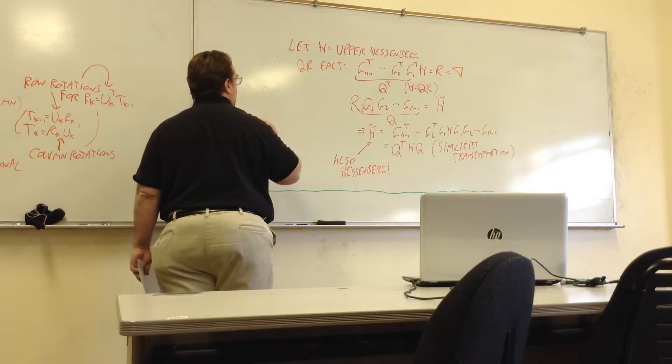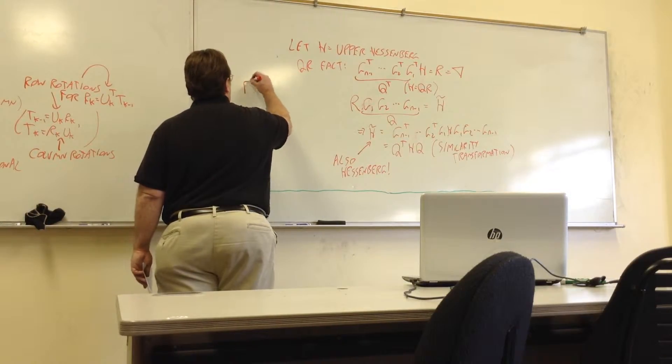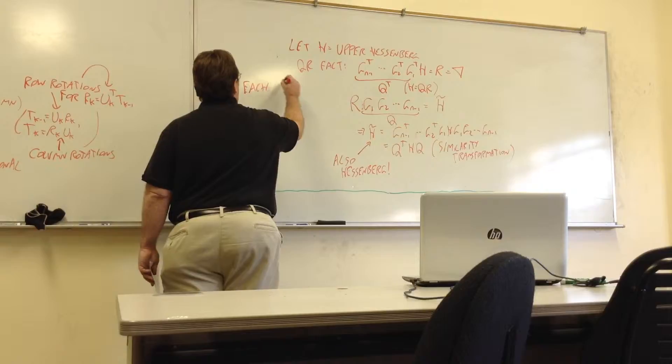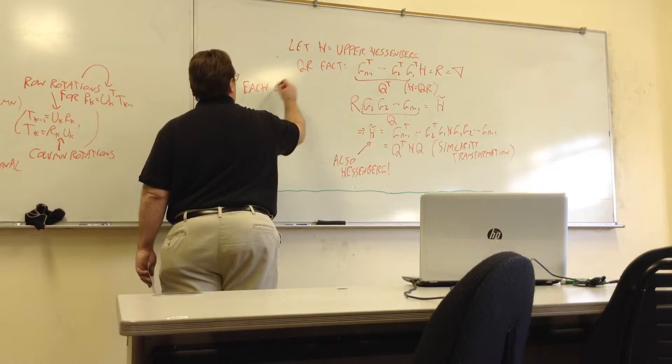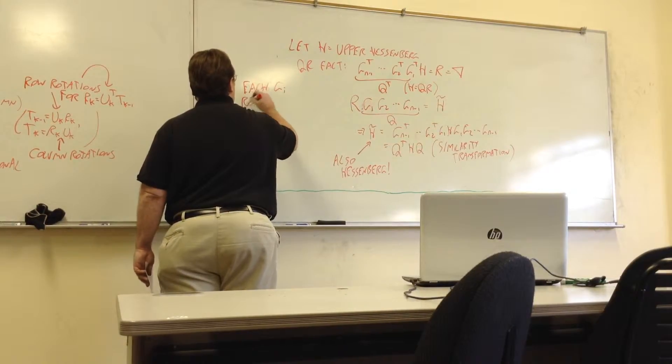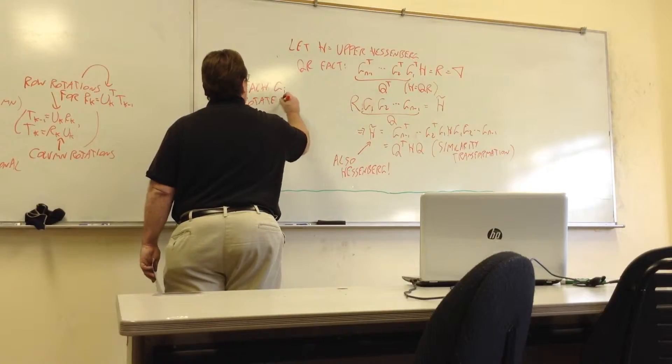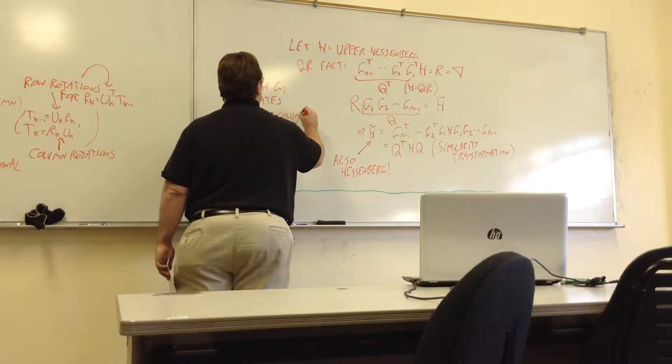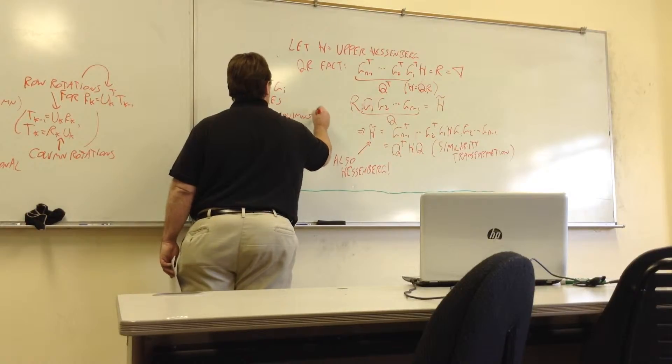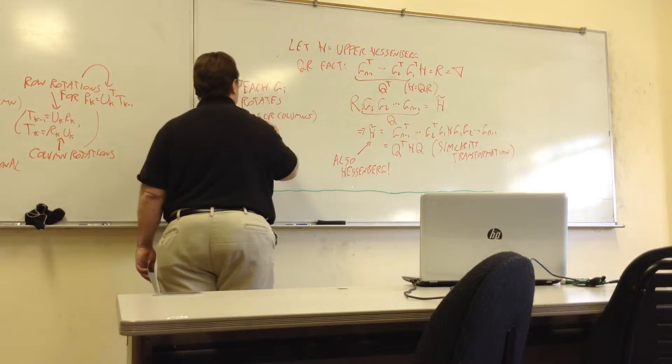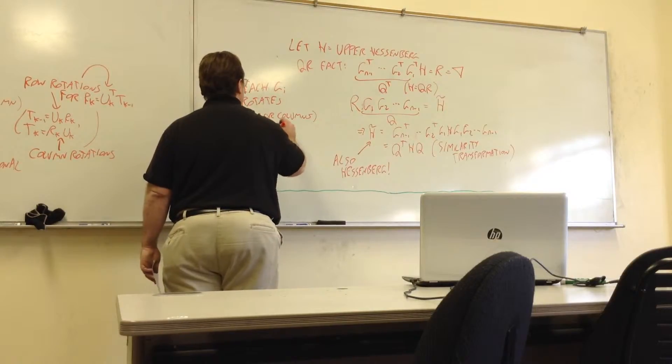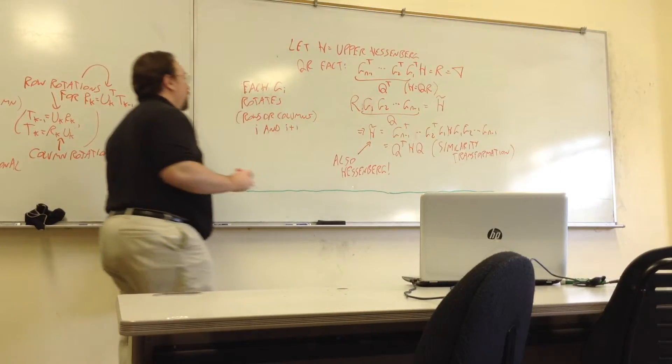So the thing to keep in mind is, each of these rotations, each GI rotates either row or column, depending on which side it's applied on. So rotates columns I and I plus one. Those are the ones that it affects.